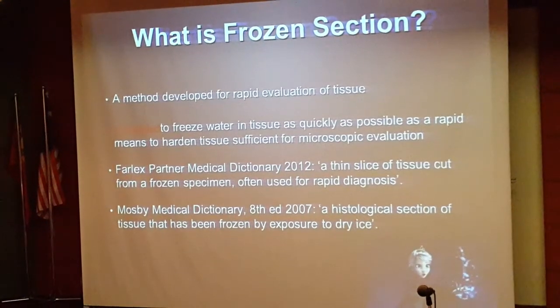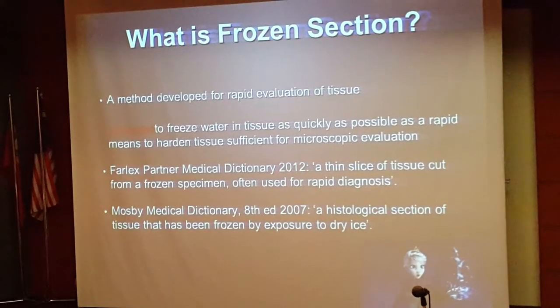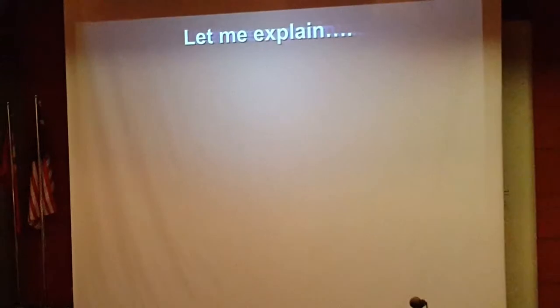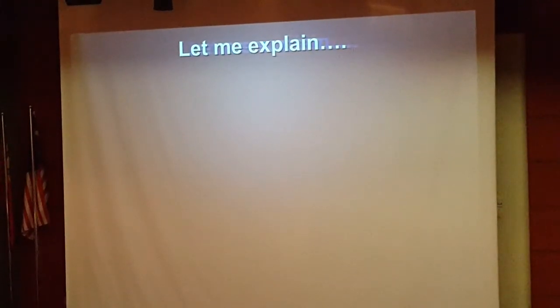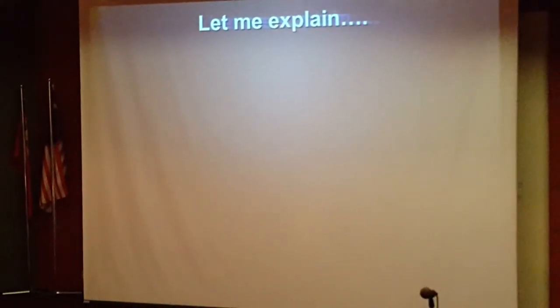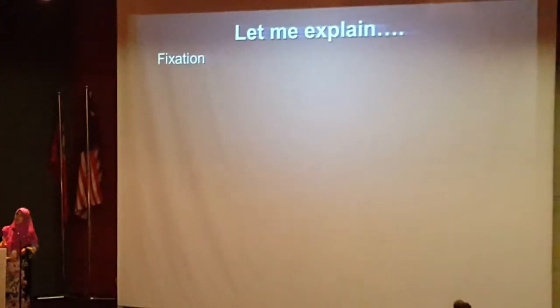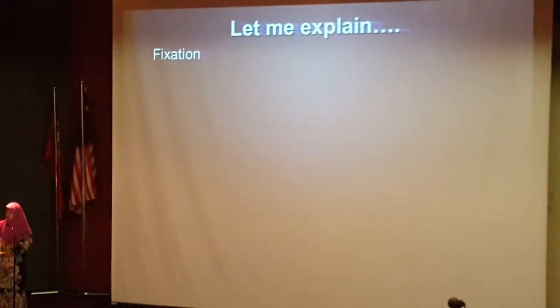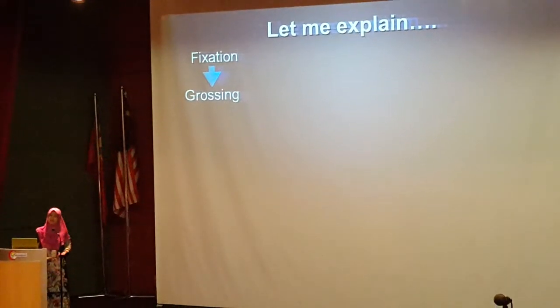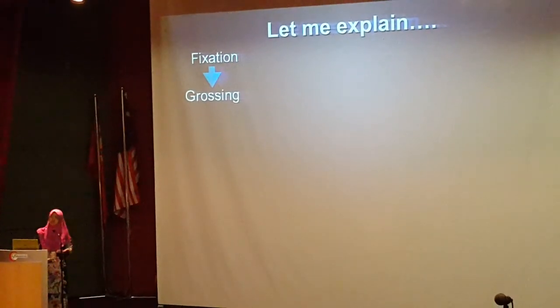Frozen Sections differ from the routine processing of specimens. For routine specimens, you put the specimen in formalin — that's the fixation process — and formalin penetration of tissue occurs at a rate of 1 mm per hour, so it's a really slow process. The specimen then comes to the lab, gets registered, and our medical officers and pathologists gross the specimen: we examine, describe, and sample it.